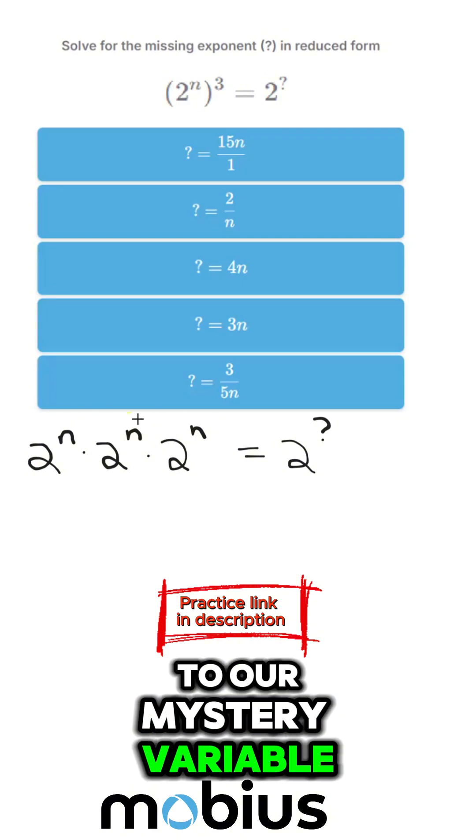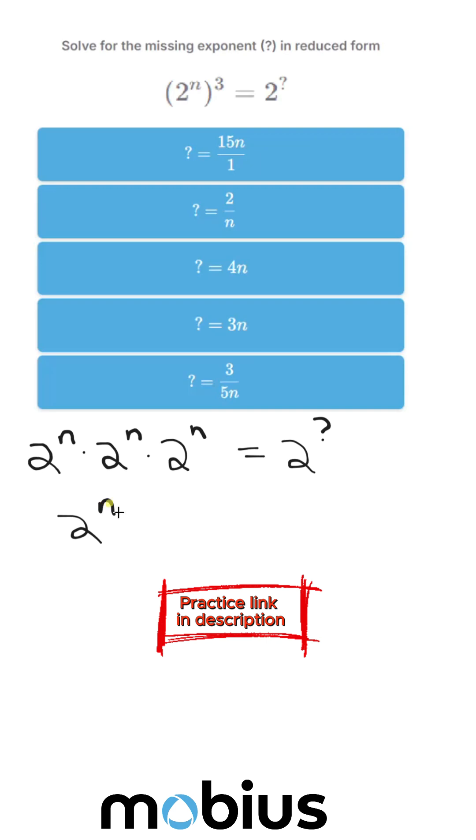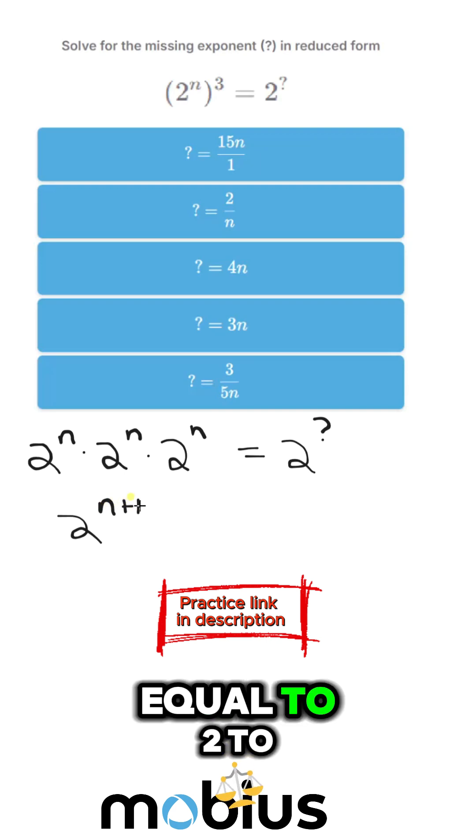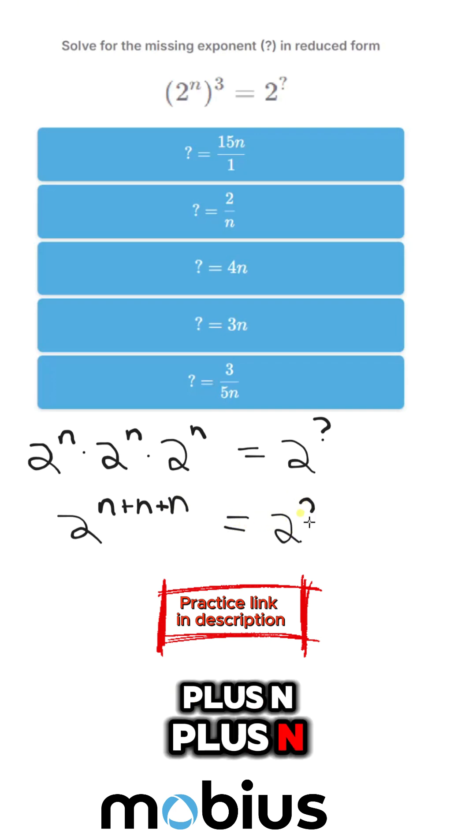And we know from multiplication that this is going to be equal to 2 to the n plus n plus n, which equals 2 to the question mark.